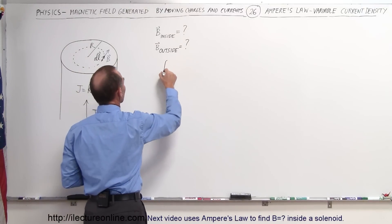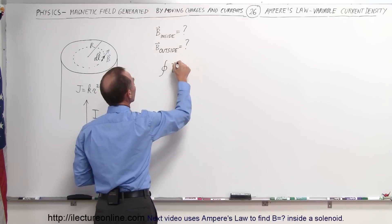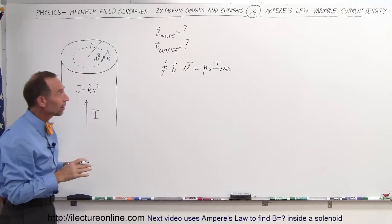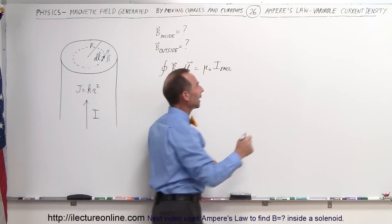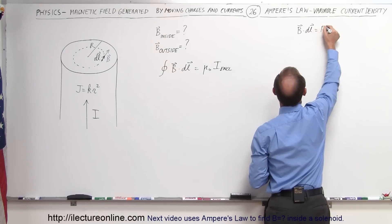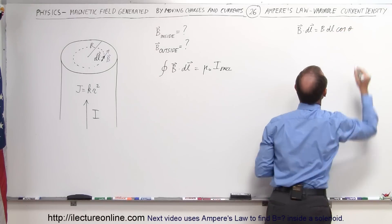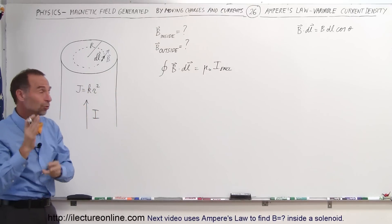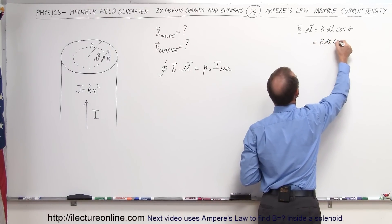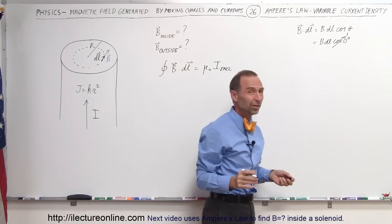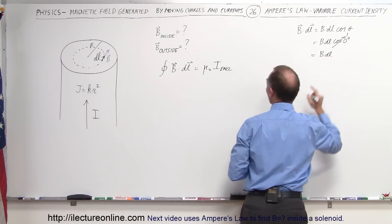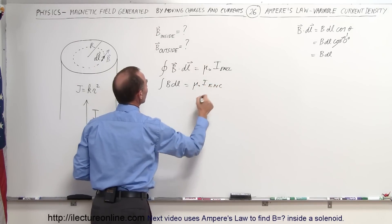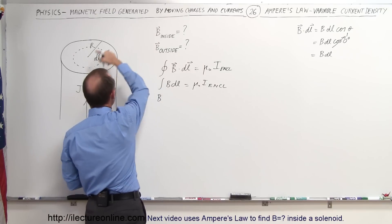Using Ampere's law, the complete line integral in a closed loop of B·dl equals μ₀ times I enclosed. B·dl is a dot product equal to the magnitude of B times the magnitude of dl times the cosine of the angle between them. Everywhere along the loop the magnetic field and the line segment point in the same direction, so the angle is zero and cosine of zero is one. We can write the integral simply as B times dl, which equals μ₀ times I enclosed, giving us B times 2πr equals μ₀ times I enclosed.